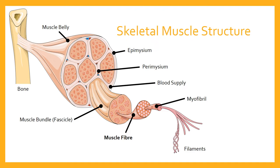Within the muscle belly, we have bundles of fibres bundled together — a whole bunch of them within the muscle belly — that are known as fascicles. And then within a fascicle, a fascicle is made up of a grouping or a bunch of fibres, and that's what we'll be talking about today. Continuing down towards the microscopic level, if we were to open up a muscle fibre and look inside, we'd see that it's made of myofibrils.